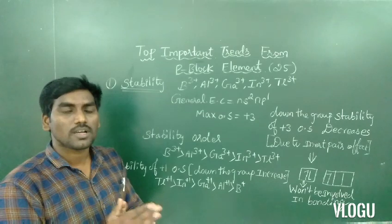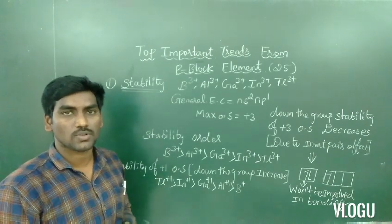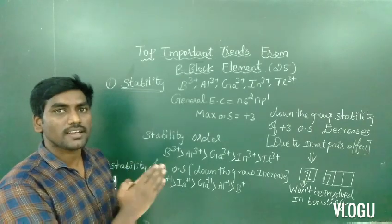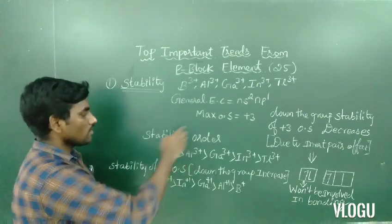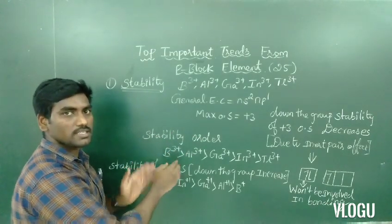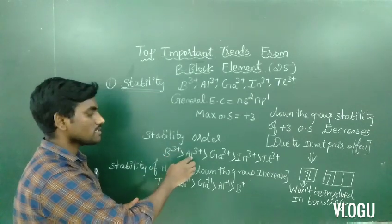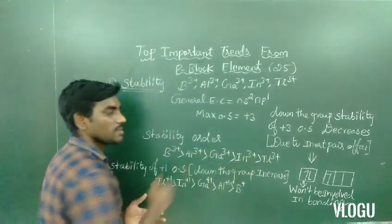So you can see, down the group plus three oxidation stability decreases. So correct order stability based on decreasing order: boron plus three, plus three oxidation stability most stable is boron plus three. Next step, aluminum three plus, gallium three plus, indium three plus and thallium three plus.